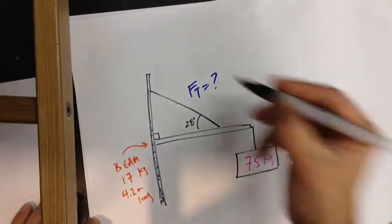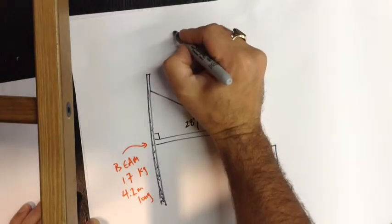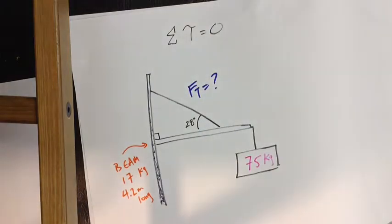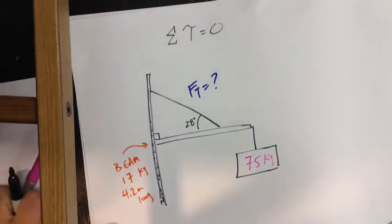For any of these torque questions, if we're in rotational equilibrium, the thing we have to start with here is the sum of the torques is equal to zero. So if we look at our forces that we have on here, we have to assign them as clockwise or counterclockwise torques.